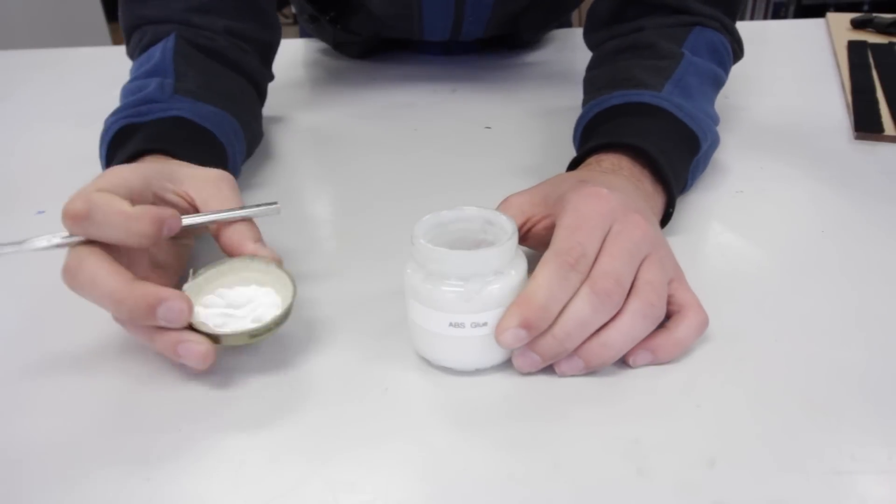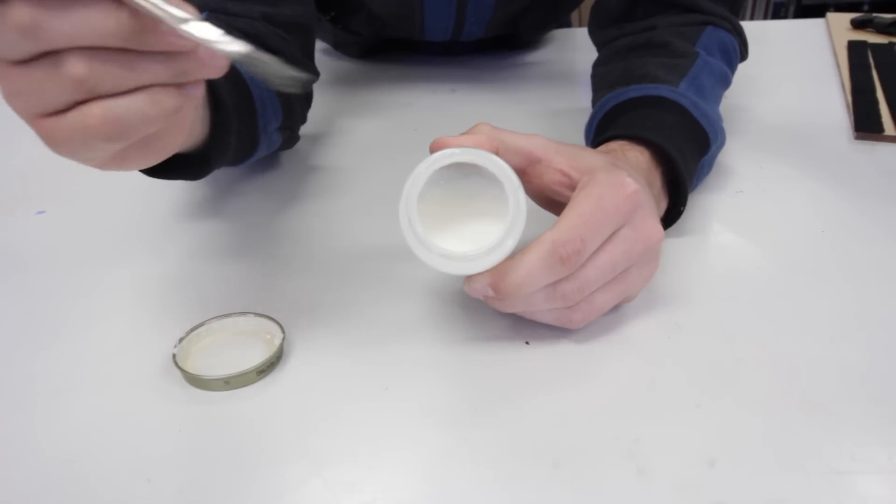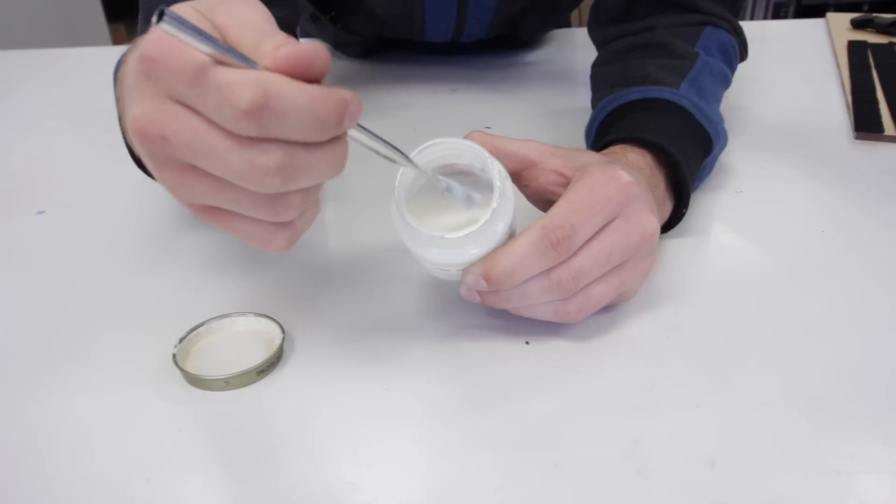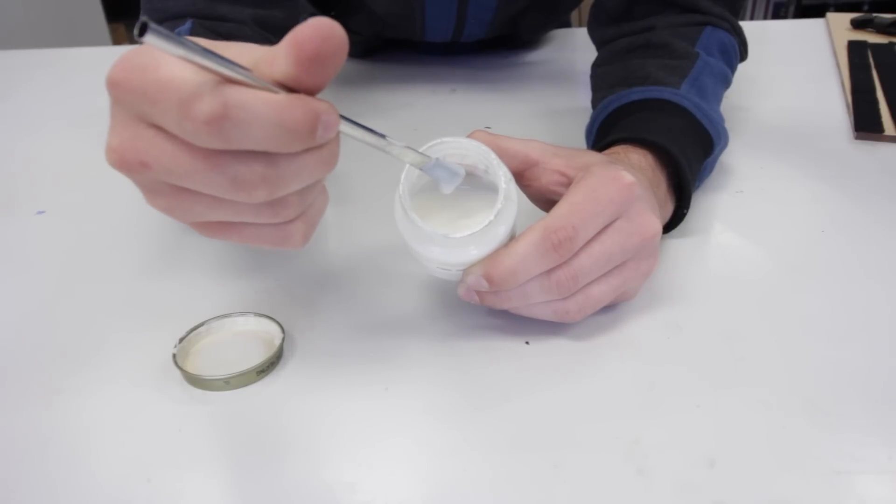ABS glue is used to attach two separate prints together, or to repair and attach part of a print that broke off from the rest. ABS glue should have a consistency similar to white school glue.